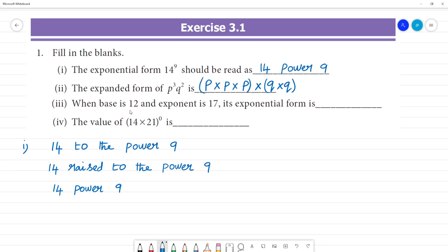Next, when base is 12 and exponent is 17, its exponential form. Base we put below, exponent we put above. So this is 12 to the power 17. Clear?